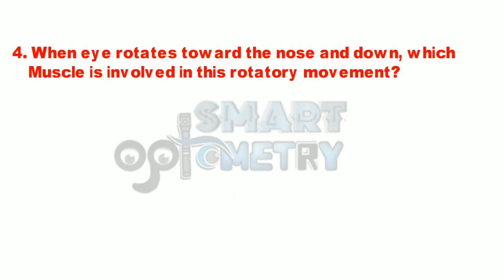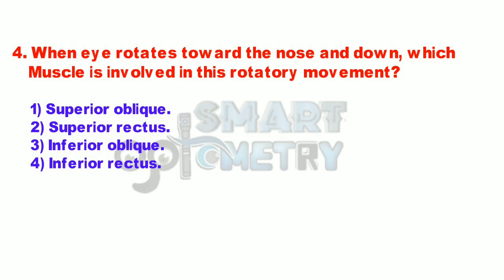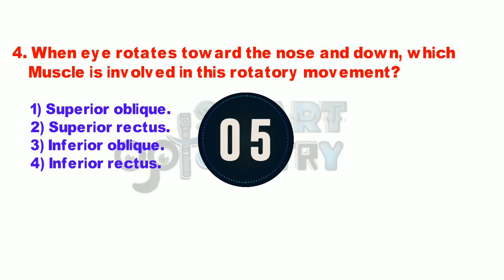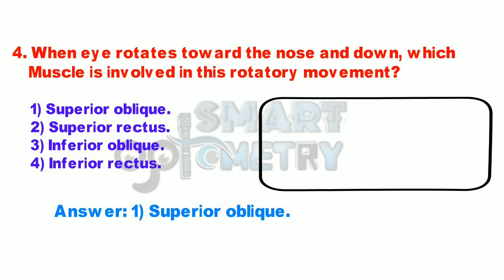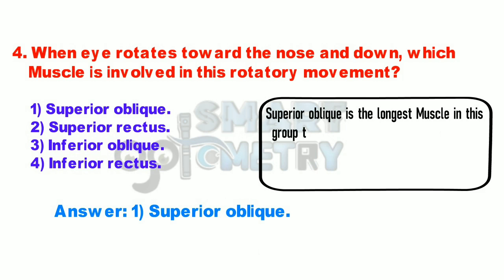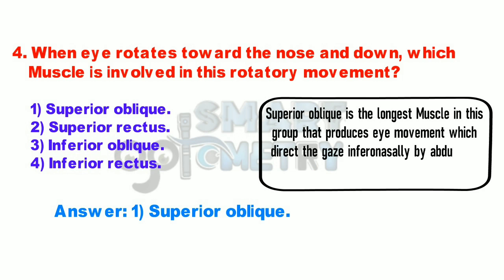Q4. When the eye rotates towards the nose and down, which muscle is involved in this rotatory movement? 1. Superior oblique. 2. Superior rectus. 3. Inferior oblique. 4. Inferior rectus. Superior oblique is the longest muscle in this group that produces eye movement, which directs the gaze inferiorly and nasally by abducting, depressing, and internally rotating the eye.